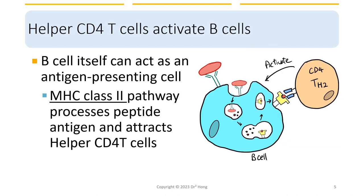We talked about how CD4 TH2 helper cells can activate B cells. Now in fact, B cells themselves can act as antigen-presenting cells. The membrane-bound immunoglobulins can bind to an extracellular pathogen and bring it into a vesicle where it gets degraded. The degraded small peptide can bind or interact with MHC class 2 and get presented to CD4 TH2 helper cells, and through this pathway, B cells can be activated.